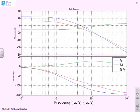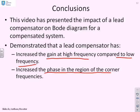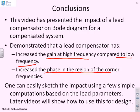Here are the exact plots, and what you'll notice is they are not far away from the plots done using very crude sketches. In conclusion, the video has presented the impact of a lead compensator on a Bode diagram for a compensated system. A lead compensator increases the gain at high frequency compared to low frequency, and increases the phase in the region of the corner frequencies. You can easily sketch the impact using just a few simple computations — low frequency gain, high frequency gain, and the phase at a few key points. Later videos will show how to use this in design.